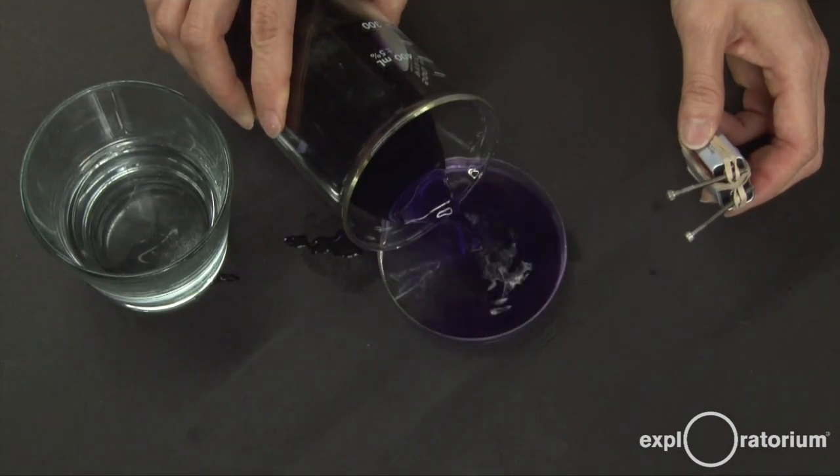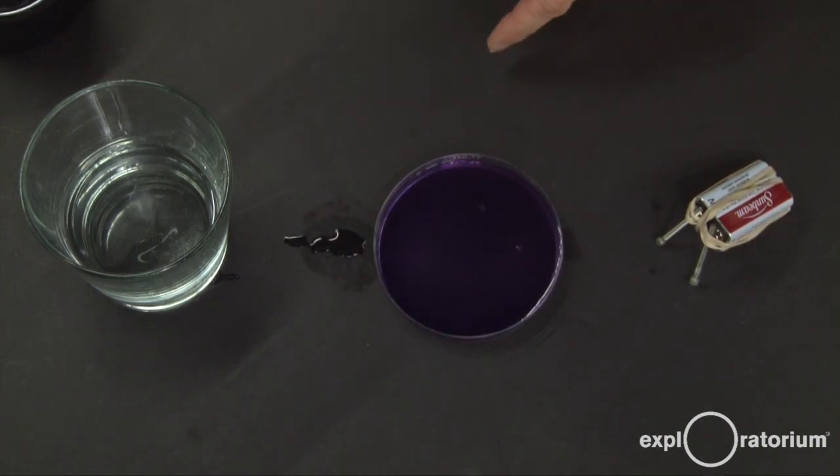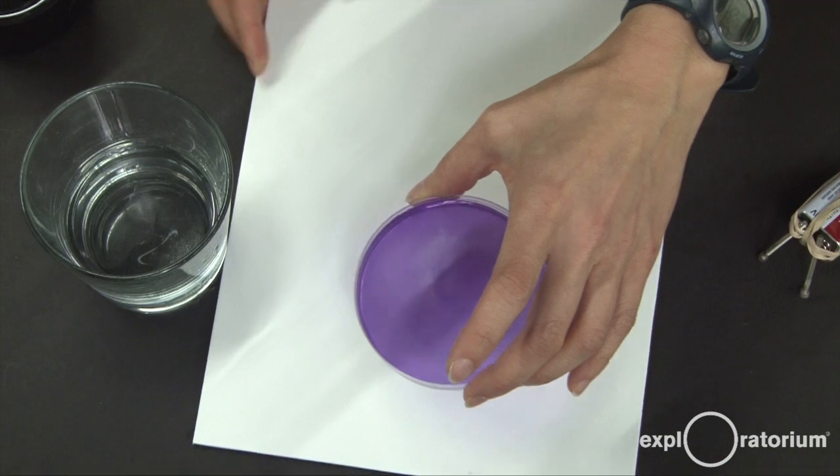Now I have a solution in this dish of pH indicator, which is my cabbage juice, and Epsom salts. This is a lot easier to see with a white background, so I'll just put this on top of a white sheet of paper.